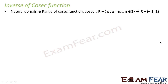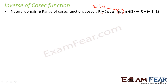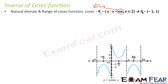For the cosec function, the natural domain and range: the domain is any real number minus nπ, because cosec is one over sine, and for any x of the form nπ, sine becomes zero, so one over sine becomes undefined. The natural domain is ℝ minus {nπ}, and the range is any number not between minus one and one.